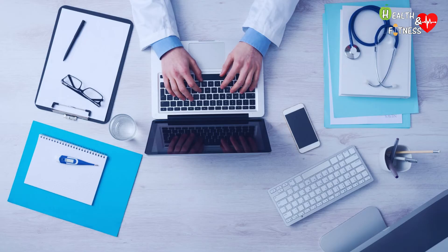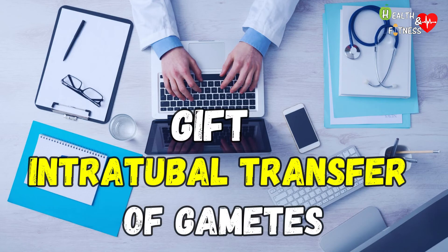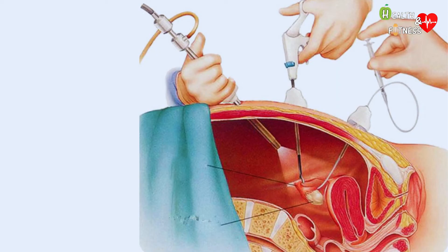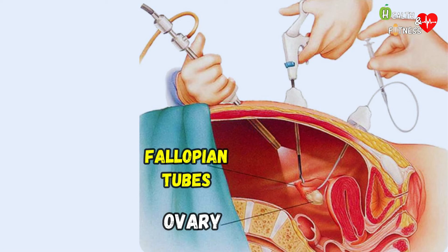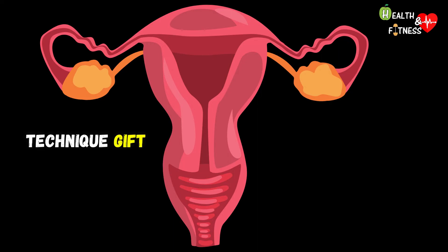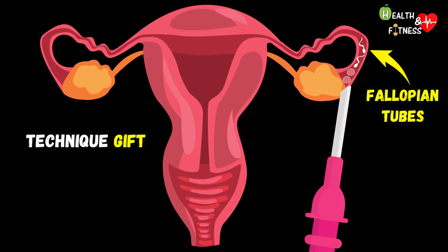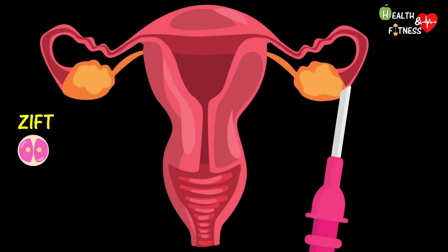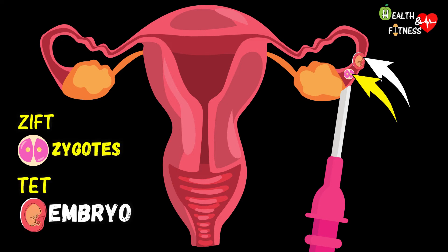Among the third-level techniques, we find GIFT, intratubal transfer of gametes. It is a technique that consists in taking the oocytes by ultrasound-guided vaginal route or through laparoscopy. Meanwhile, the man donates his semen sample. The female and male gametes are then transferred into the fallopian tubes, where fertilization should take place. In the event that embryos or zygotes are transferred, we speak of the ZIFT technique — intratubal transfer of the zygotes — or the TET technique, intratubal embryo transfer.